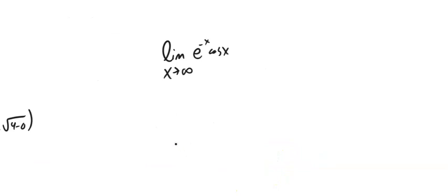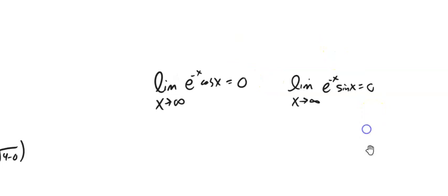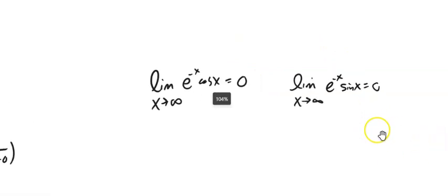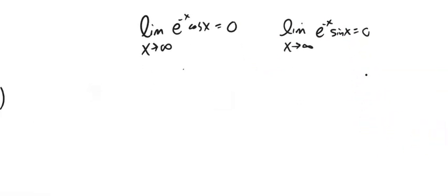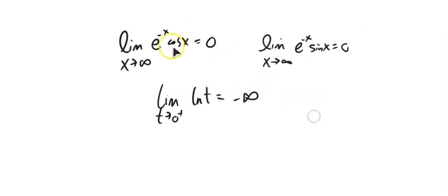Just a couple of things for you to realize. You could work these out with a squeeze theorem. But both of these go to zero. So those are good limits to know. Natural log, I think we might have talked about that last time, but just in case. As t approaches zero from the positive side, natural log goes to negative infinity.